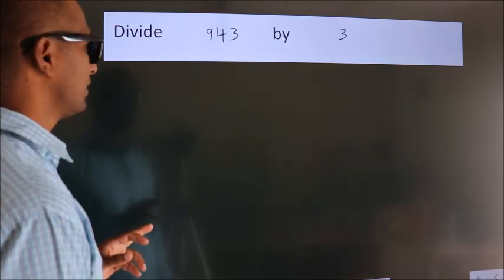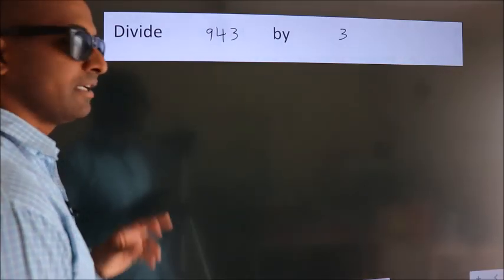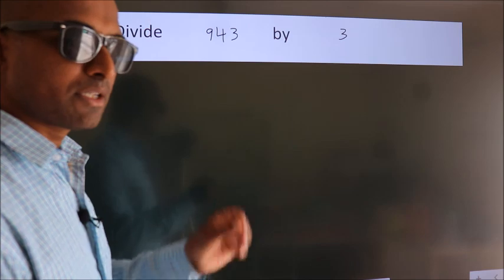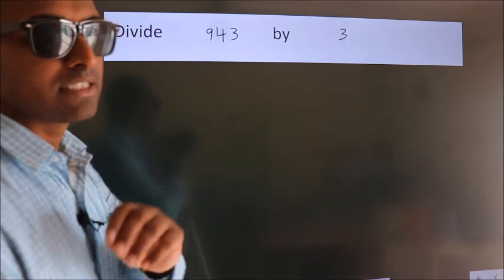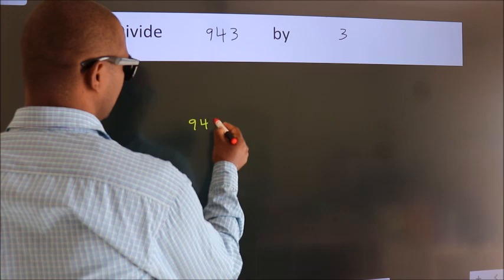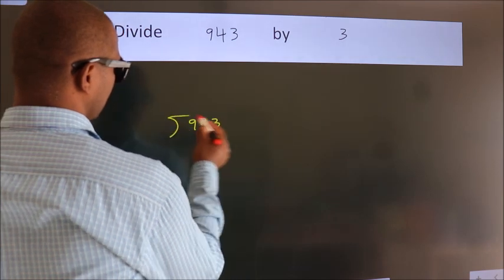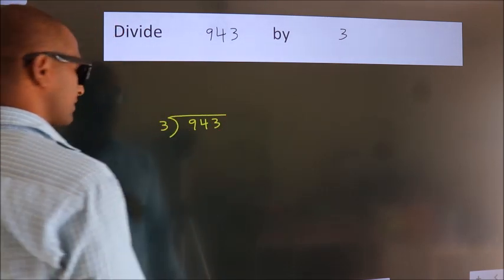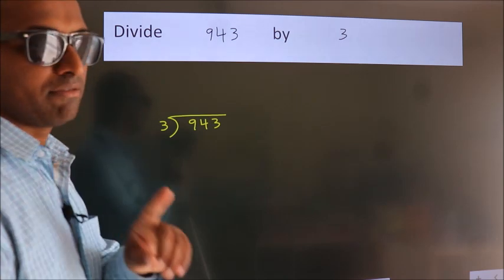Divide 943 by 3. To do this division, we should frame it in this way: 943 here, 3 here. This is your step 1.